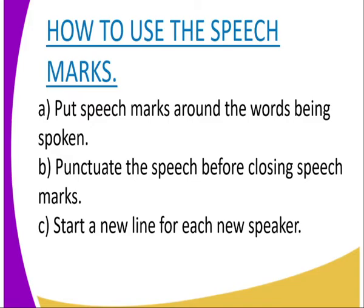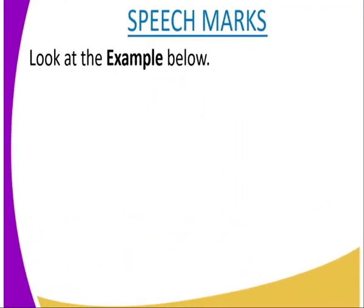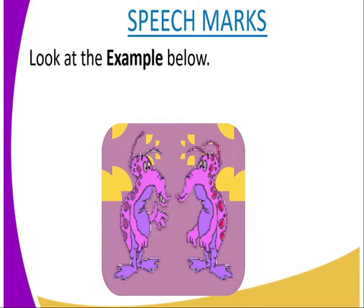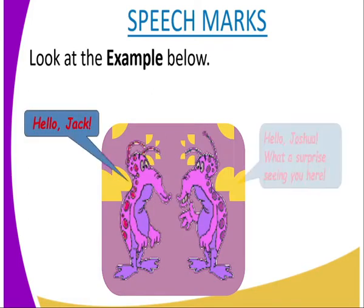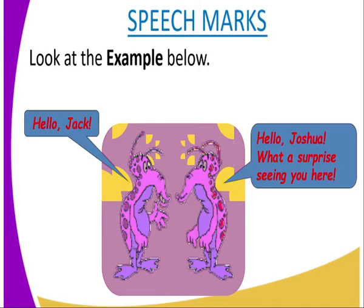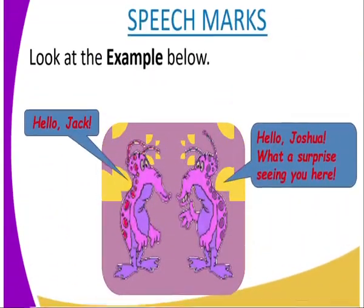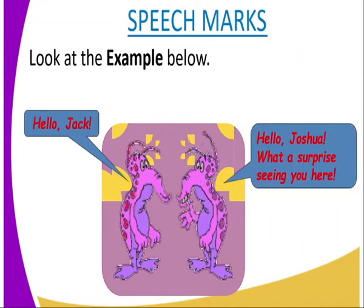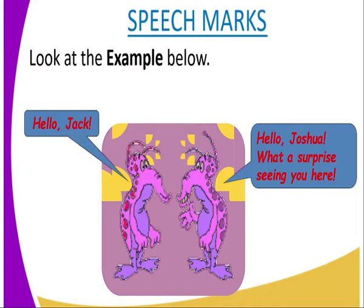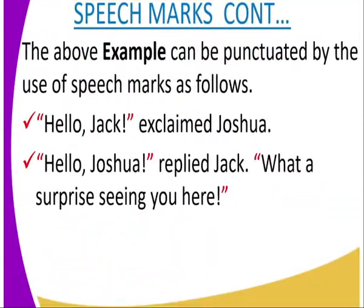You can look at an example below. These are two people conversing. You can see the first speaker saying 'Hello Jack' and the second speaker responding 'Hello Joshua, what a surprise seeing you here.' In the example, these are two people conversing and their words have been put in speech marks. You can see what the first speaker says and the response of the second speaker.